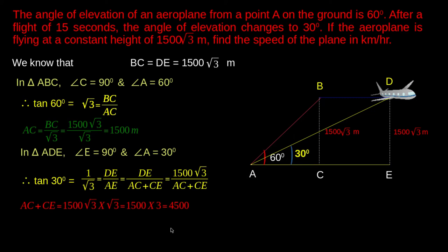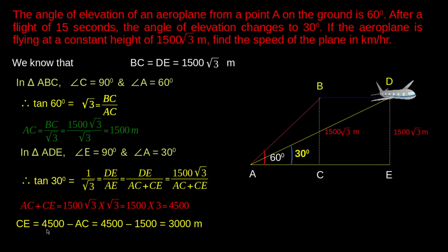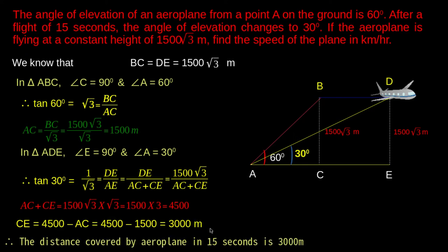To find CE, we know that AE = AC + CE. That is 4500 meters. Therefore, CE = 4500 minus AC = 4500 minus 1500, which equals 3000 meters. The distance covered by the aeroplane in 15 seconds is 3000 meters.